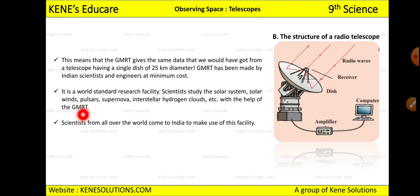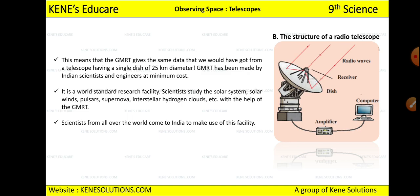A question can be asked: write the full form of GMRT and its two uses. GMRT is used by scientists for studying the solar system, solar wind, pulsars, supernovae, and interstellar hydrogen clouds. Scientists from all over the world come to India to use this facility, as constructing their own would require huge investment. This is one of India's great inventions.